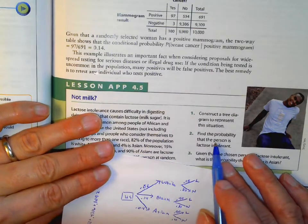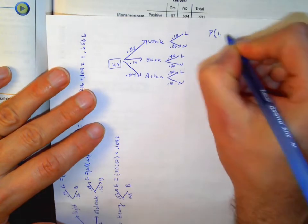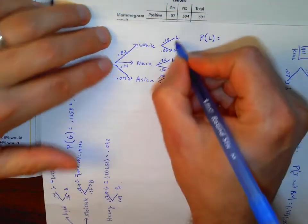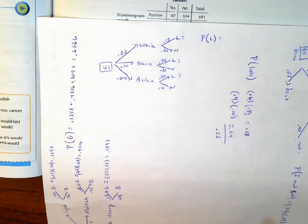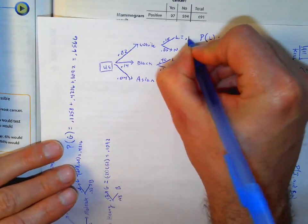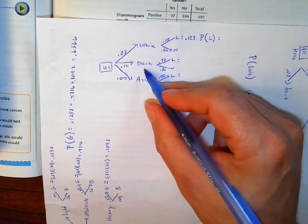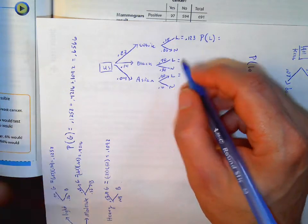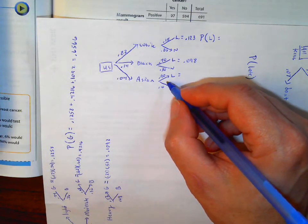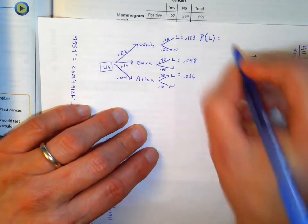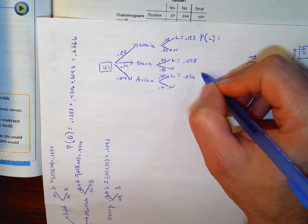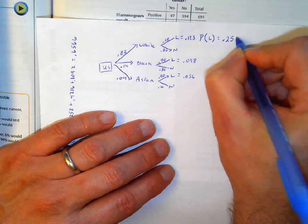Find the probability that a randomly selected person is lactose intolerant. We calculate each branch: 0.82 × 0.15 = 0.123 for whites, 0.14 × 0.70 = 0.098 for Blacks, and 0.04 × 0.90 = 0.036 for Asians. Adding those together: 0.123 + 0.098 + 0.036, which is a little over a quarter — about 25.7% — of the population is lactose intolerant.